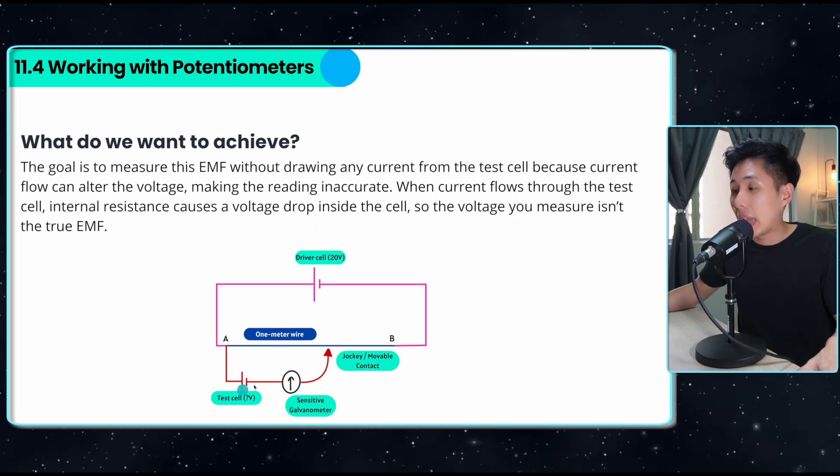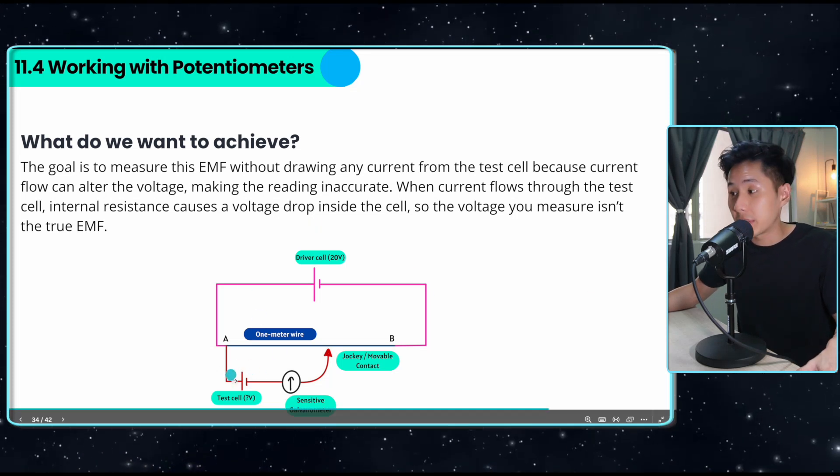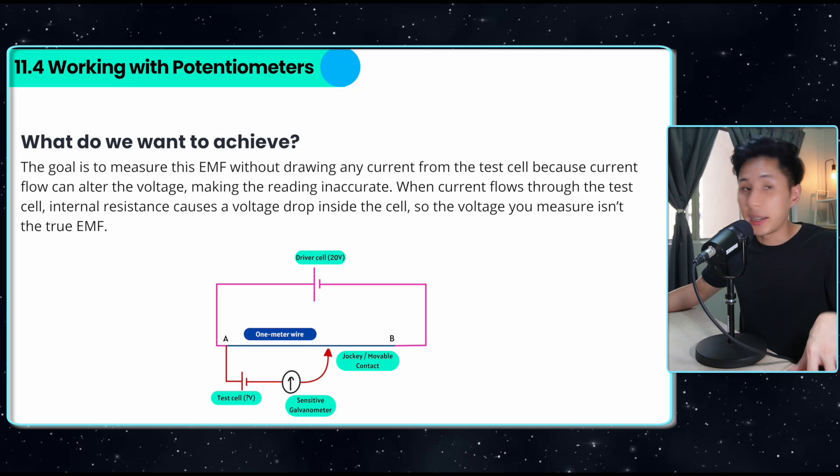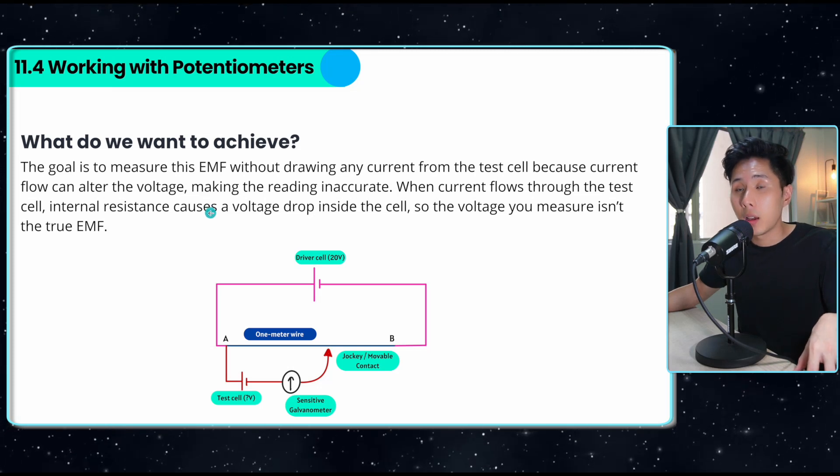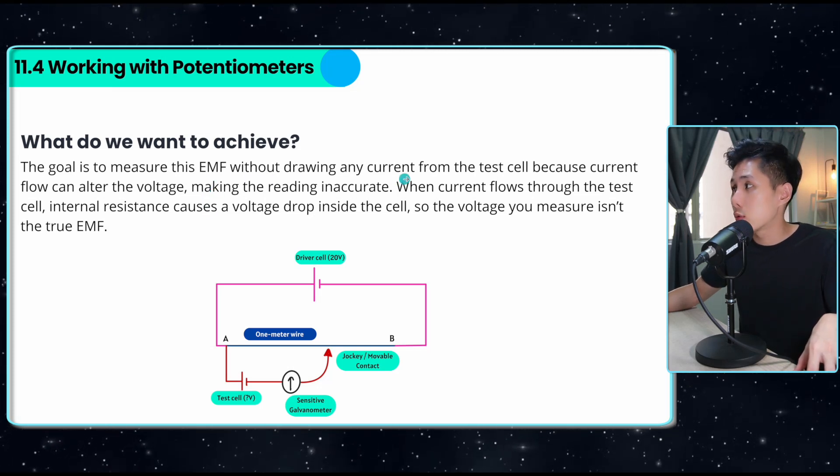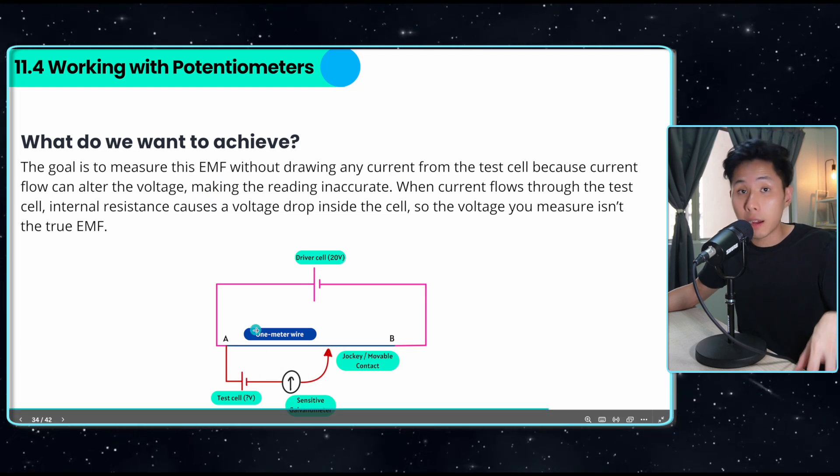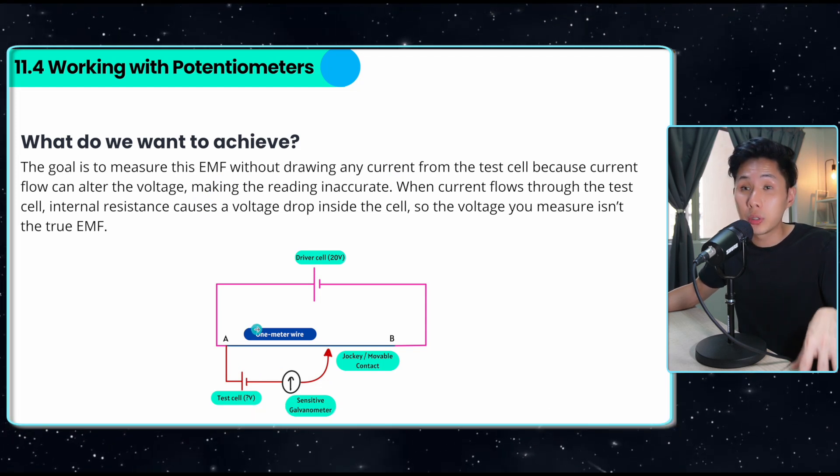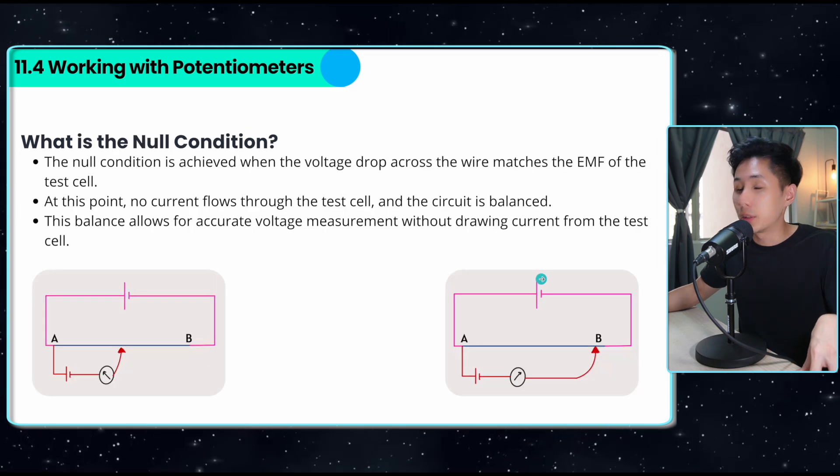We have a sensitive galvanometer and a jockey movable contact. So the goal again is we have to calculate the voltage of the test cell without using a voltmeter. The reason behind that is we want to measure the EMF without drawing any current from the test cell, because current flow can affect voltage due to internal resistance.